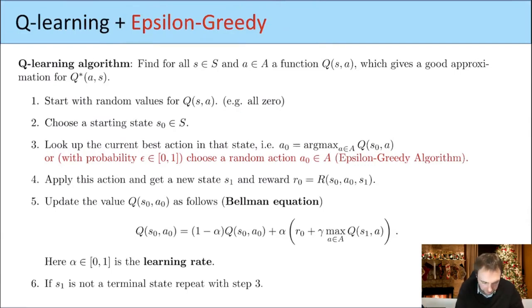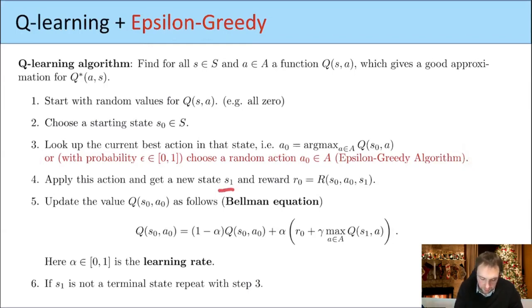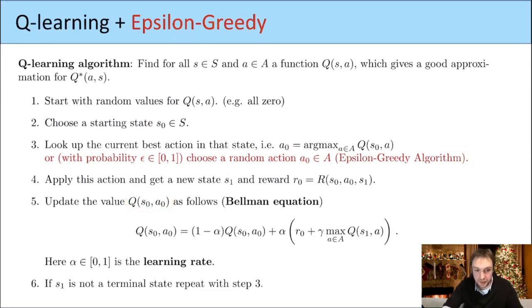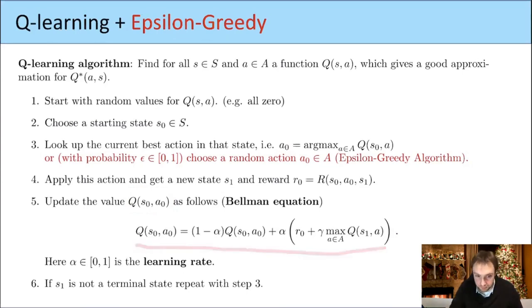By a certain percentage, we also sometimes just choose a random action — this is the so-called epsilon greedy algorithm, though maybe this is not so important now. If we choose some action, we get a new state and a reward. Then we update this Q value using the following formula.